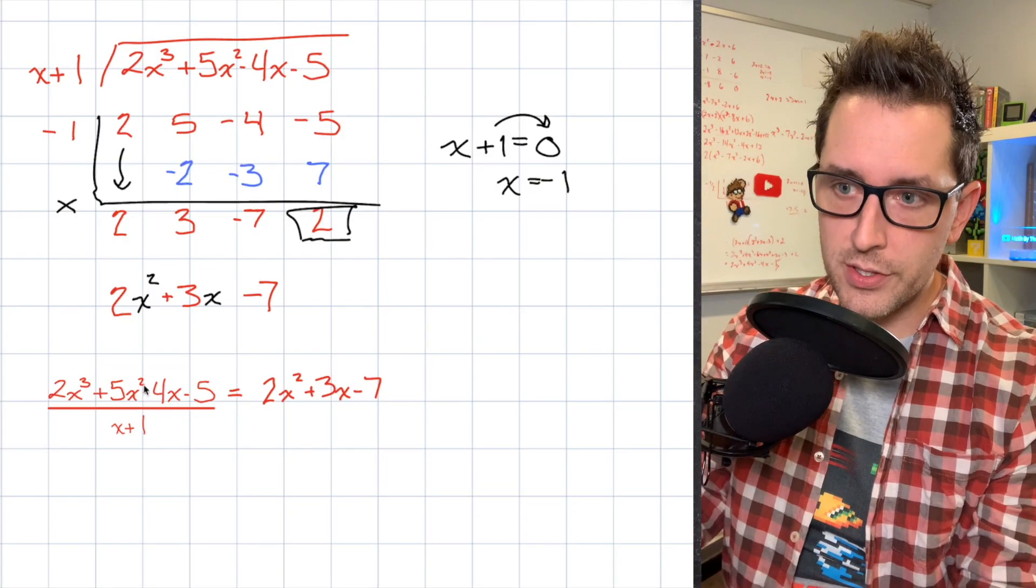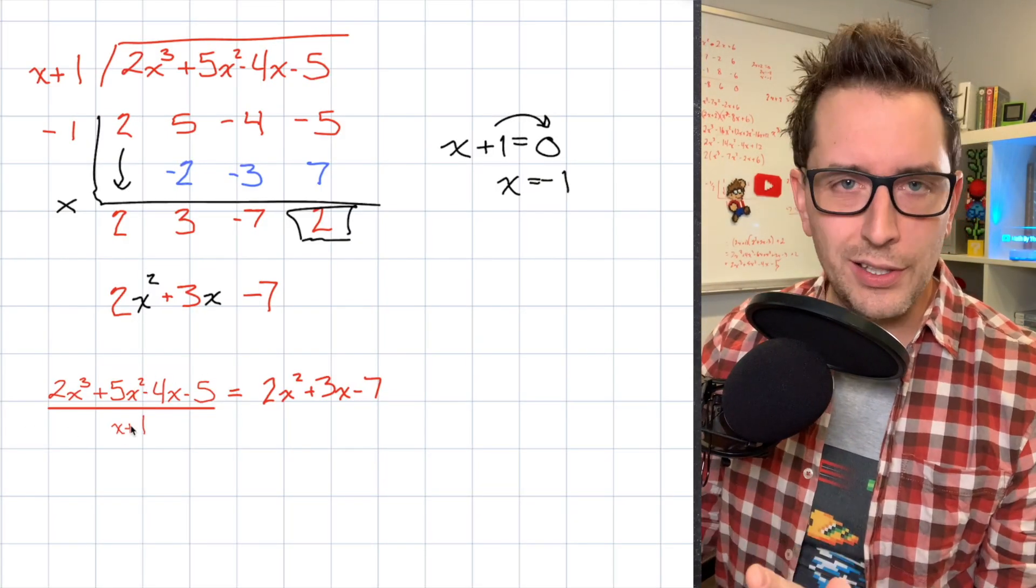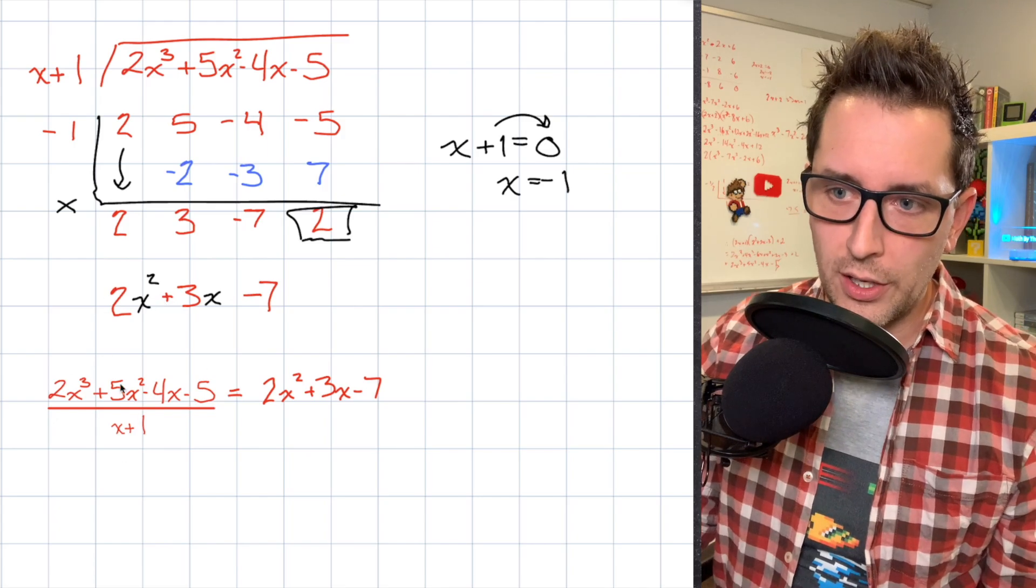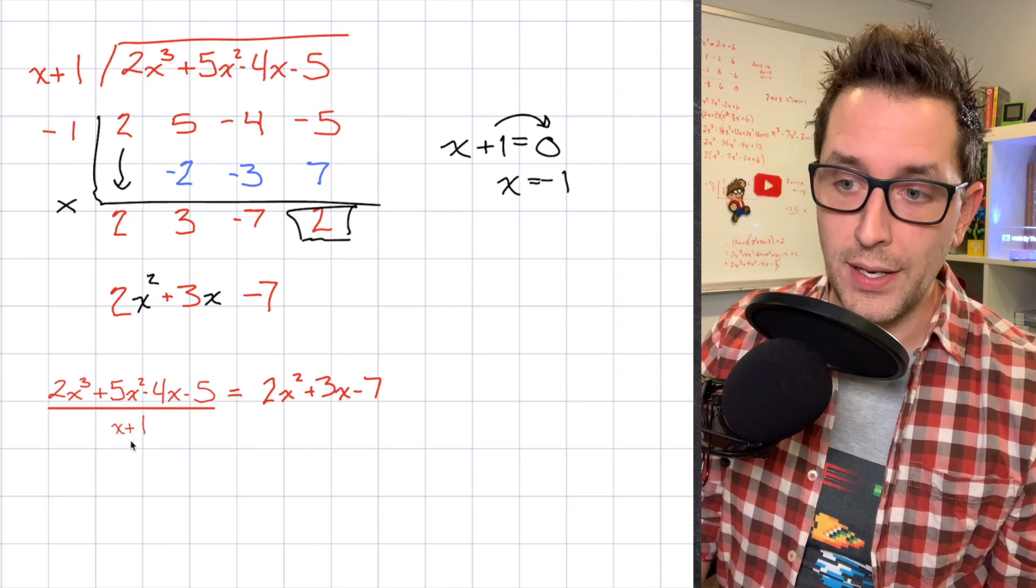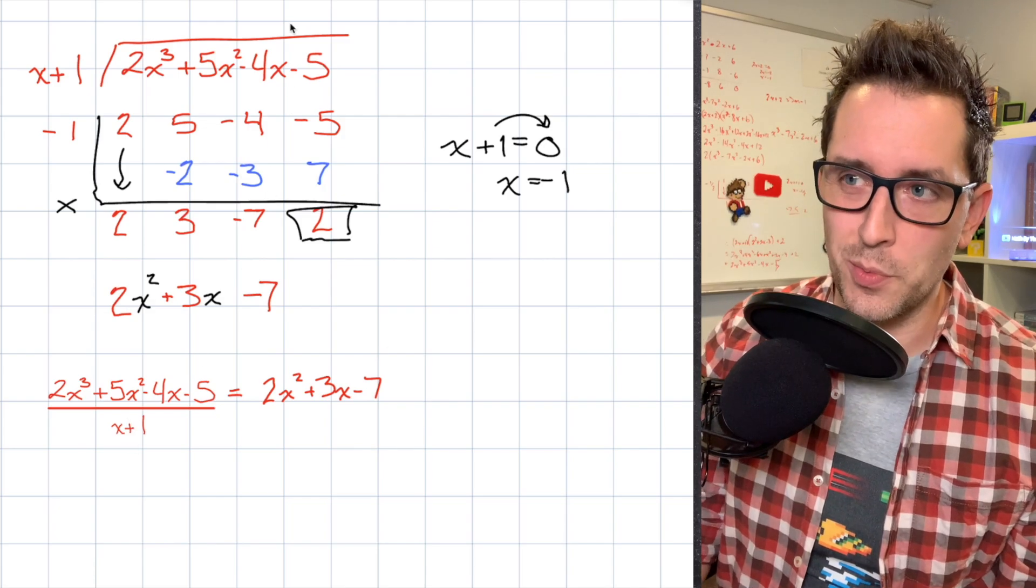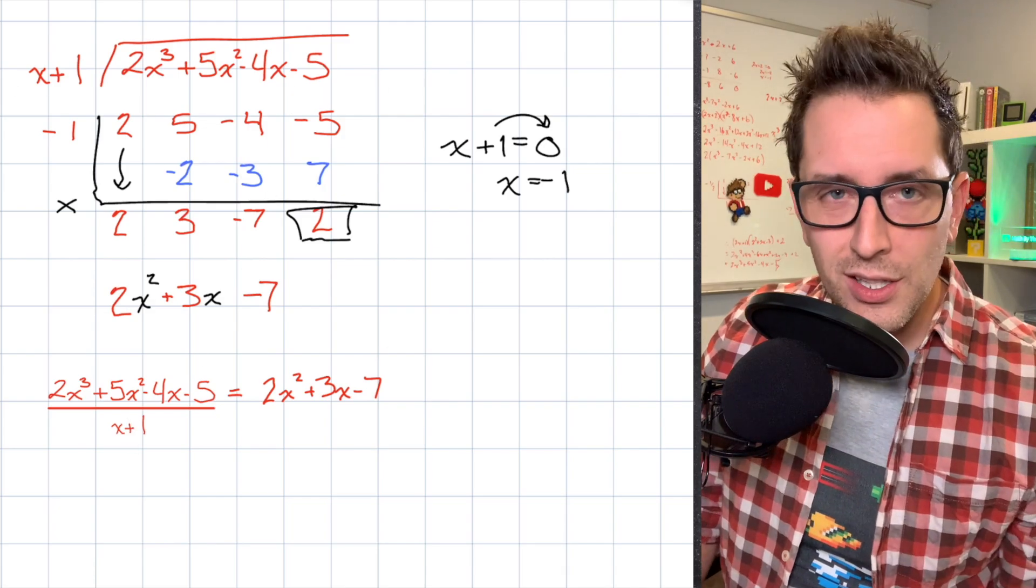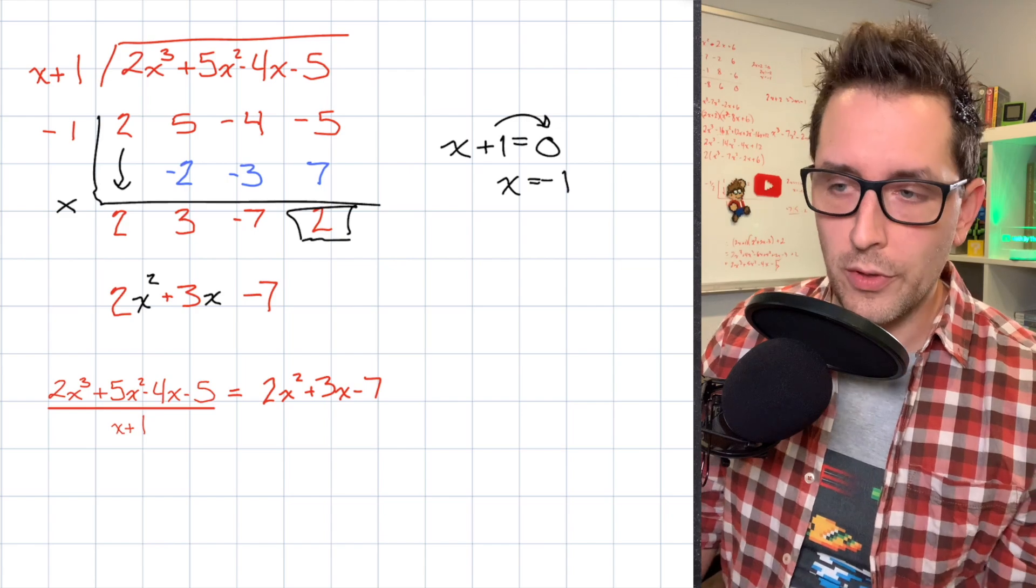Now to do that, what I've done is I've just taken our problem and I've rewritten it a little differently. What this says down here is I've got my dividend of that cubic expression and I'm dividing it by my divisor of x plus 1. That's the same thing as what I have up here. Alright, just represented a little bit differently so that I can show you what we're going to do with this remainder.